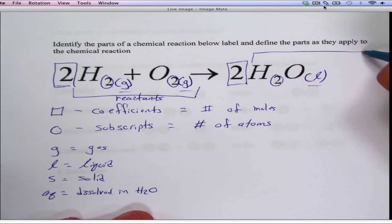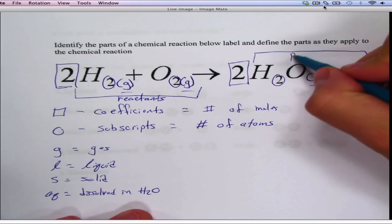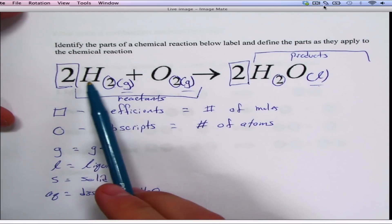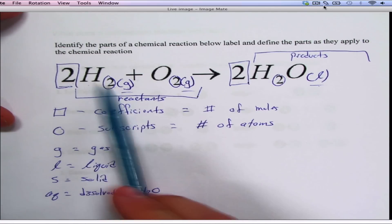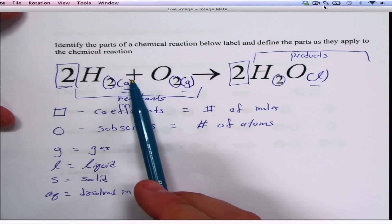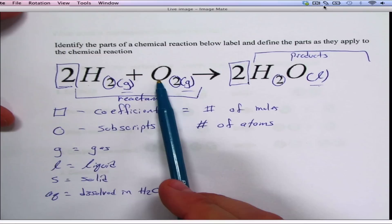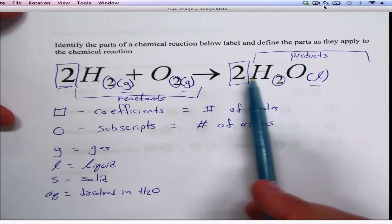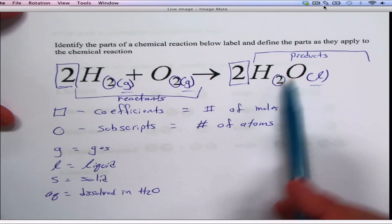Then everything on this side, no matter how much there is, this is called the products. And how I would read this is: two moles of hydrogen gas reacts with one mole of O2 to produce two moles of H2O.